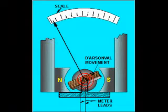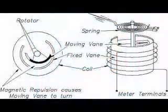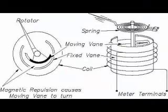Current in one direction through the wire will produce a clockwise torque on the needle mechanism, while current in the other direction will produce a counter-clockwise torque. Some meter movements are polarity insensitive.